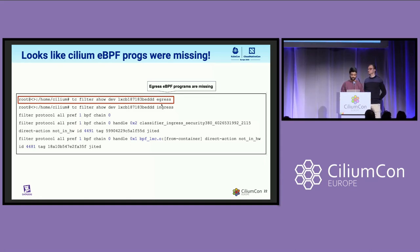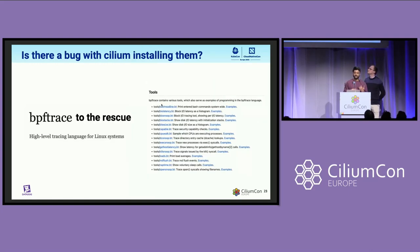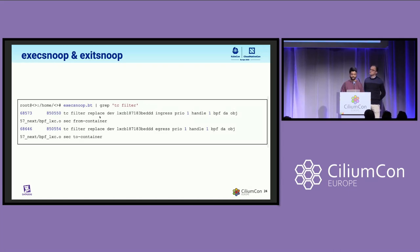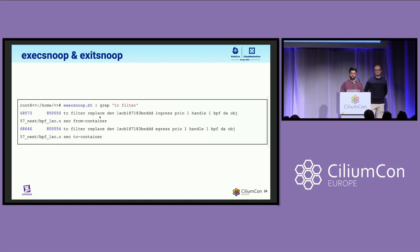We were totally confused and wanted to understand why. BPF has a rich ecosystem of tools available, so we decided to use BPFtrace. BPFtrace comes out of the box with a lot of tools. We decided to use exec snoop and exit snoop. Since Cilium was using the TC binary to install the BPF programs, exec snoop lets us trace all programs being started on the host. We ran exec snoop with a grep of TC filter, and we saw that TC filter replace commands were actually being executed for both from-container and to-container — corresponding to egress and ingress sections. We also ran exit snoop, which tells us the exit codes of these commands, and we saw that they were all completing successfully with no issues at all.